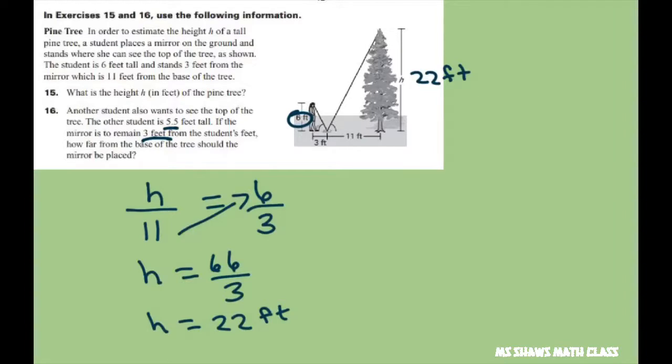So we have the same figure pretty much. We have 22 here. This is going to change to 5.5 and this part here is the part we don't know. So that's your x. So basically you do it again.